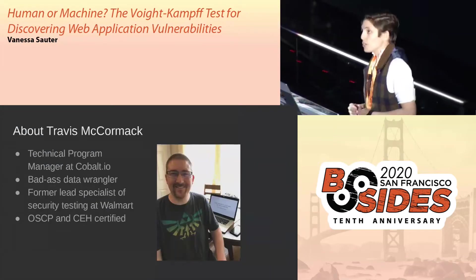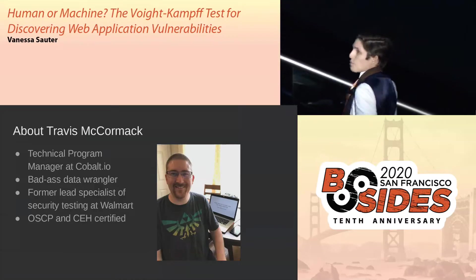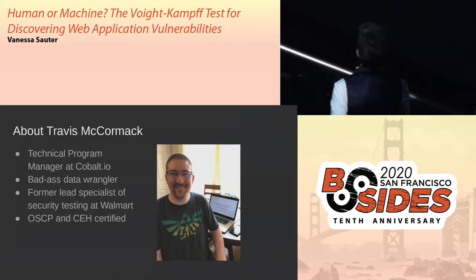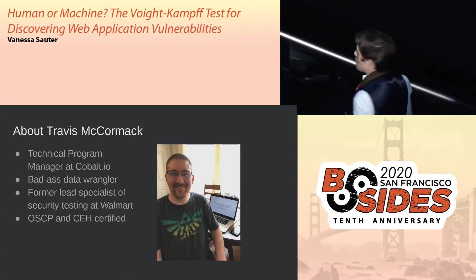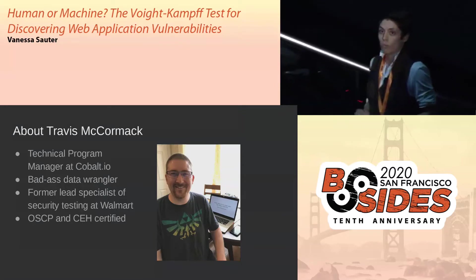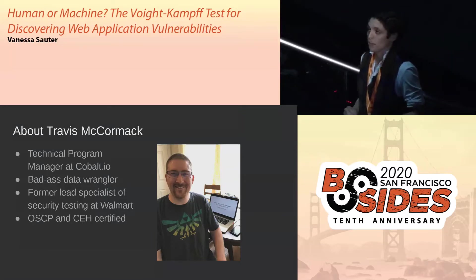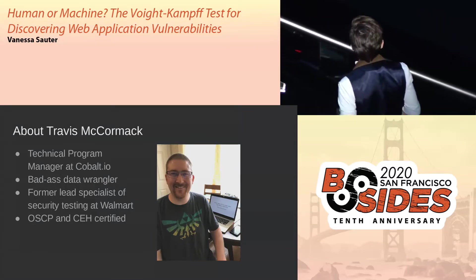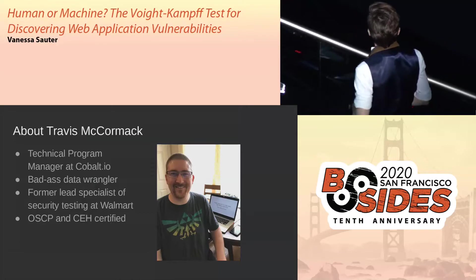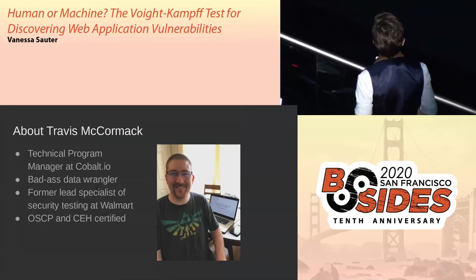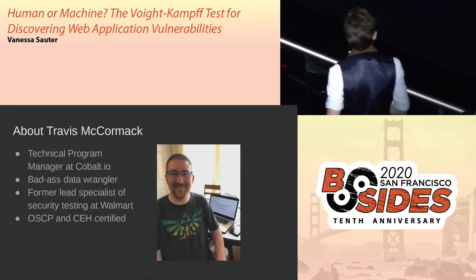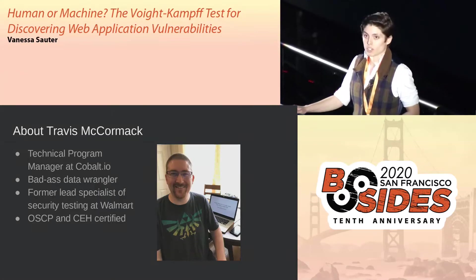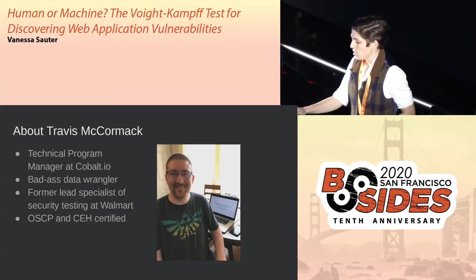A lot of the work that I did was focused on the threat motivations behind APTs, and from that, I looked at the value of vulnerabilities and thinking about how vulnerabilities intersect with the way that APTs operate. And now I'm at Cobalt. I moved to San Francisco about six months ago. My co-researcher on this talk, Travis McCormick — he's not here today, he's based in Virginia — is a technical program manager at Cobalt, a shepherd of our pen tests and pen testers, a badass data wrangler and former lead specialist of security testing at Walmart.